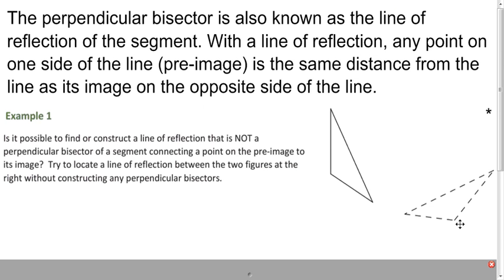Now we already learned that perpendicular bisector is a line of reflection. So if you look at a segment and have a perpendicular bisector, any point on one side is equidistant from the corresponding point on the other side.